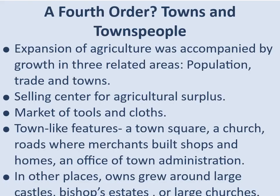A fourth order: towns. The expansion of agriculture was accompanied by growth in three related areas: population, trade, and towns. When there is food, these three things obviously increase. Selling centers for agricultural produce, markets of tools and clothes, and town-like features emerged — a town square, a church, roads where merchants built shops and homes, and offices of town administration. In other places, homes grew around large castles, bishops' estates, or large churches.